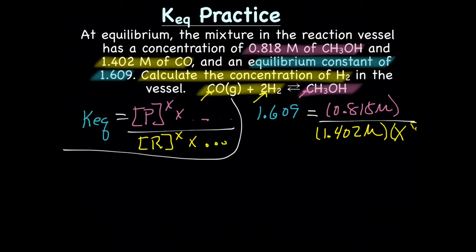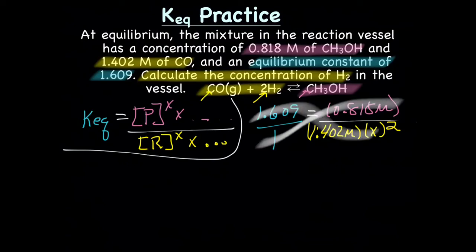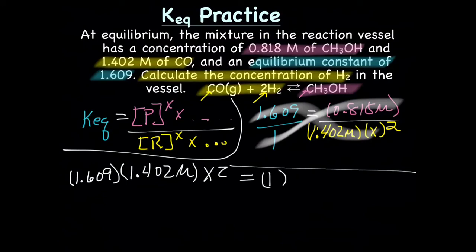And that squared won't fit. Let's see if I can make this fit. X squared. 1.402 times X squared. If I were you, what I would do is put 1.609 over 1, because that's basically the same thing. So then you can cross-multiply. We end up with 1.609 times 1.402 times X squared equals 1 times 0.818 molar.